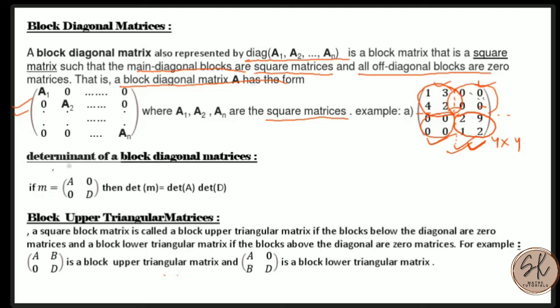Now let us find the determinant of a block diagonal matrix. If M equals [A, 0; 0, D], then det(M) = det(A) × det(D), where A and D are the non-zero square matrices and the 0s are null matrices. This is the formula for finding the determinant of a block diagonal matrix.